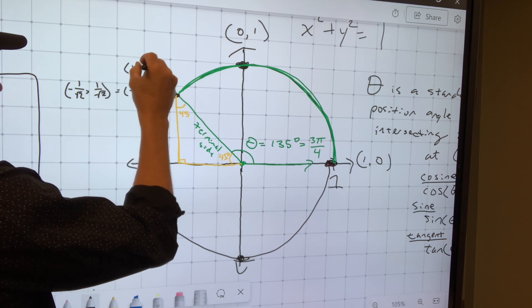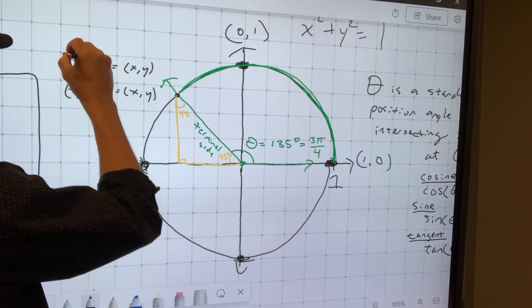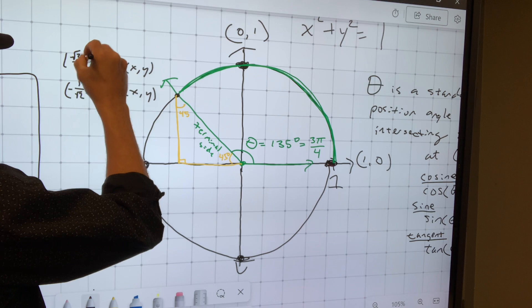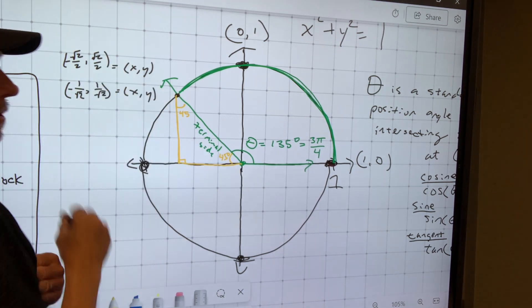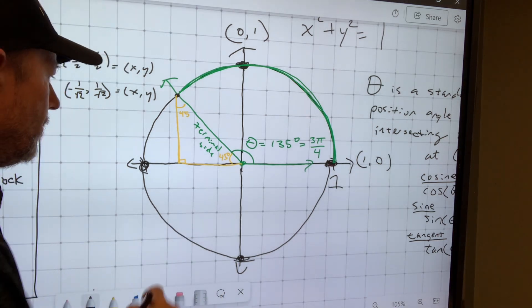Rationalized, this point is equivalent to the square root of two over two. This one's a negative though, because we're going to the left and then we're going up. So that one's positive. So now we're ready to evaluate.